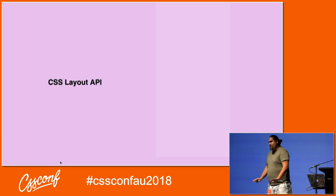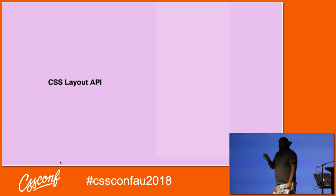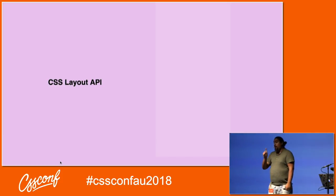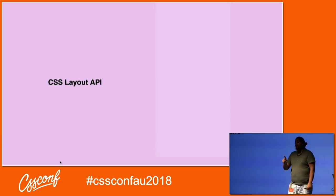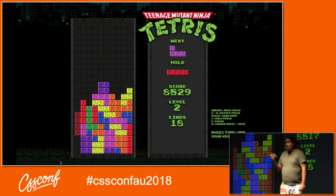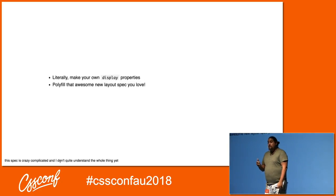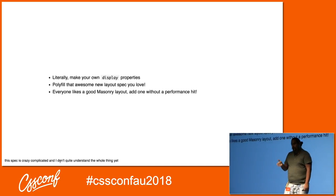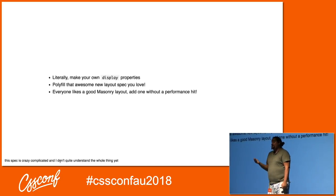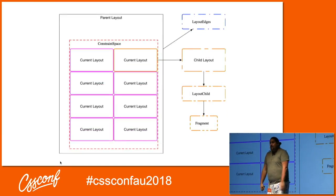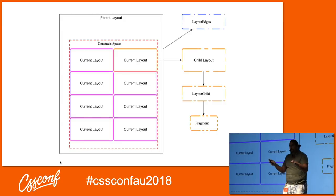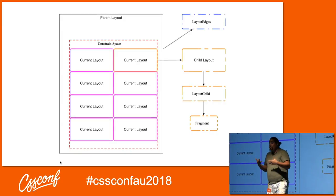The last one, the big one: the Layout API. This one's really complex, but the advantage is you'll understand how CSS grid works at the end. What is the CSS Layout API? It's going to let us create our own display properties — effectively make our own Tetris. It will let us polyfill new awesome layout specs, and because I know you like a masonry layout, we can make masonry layouts without the performance hit.